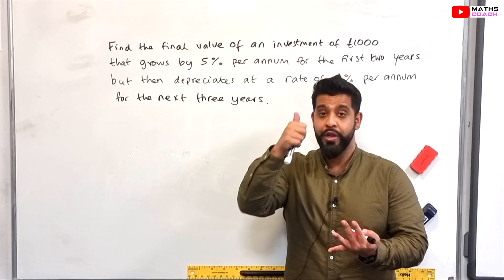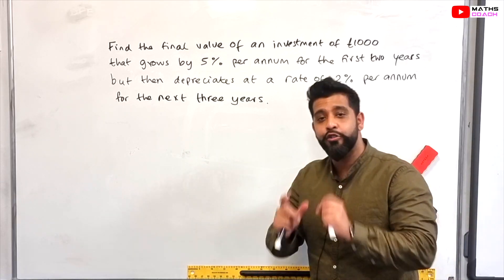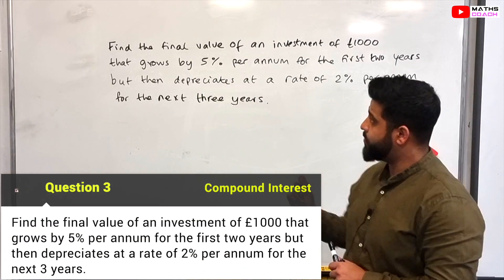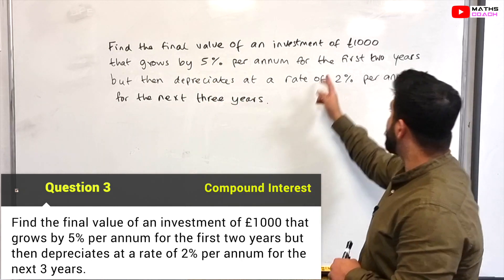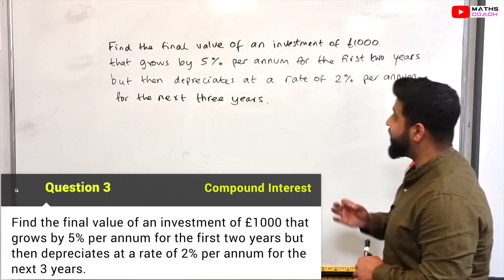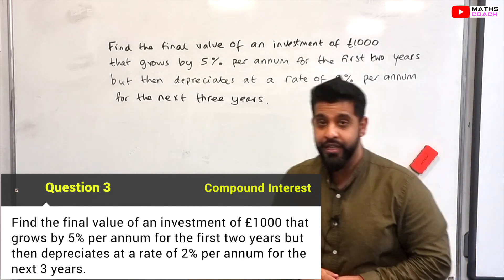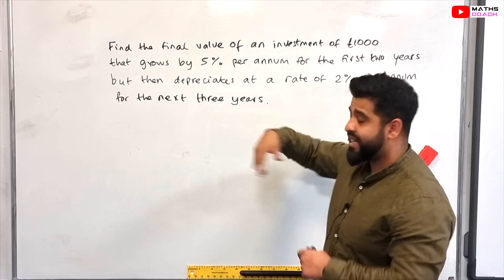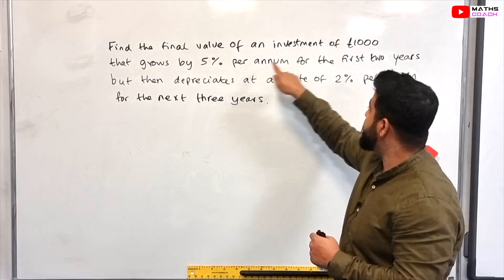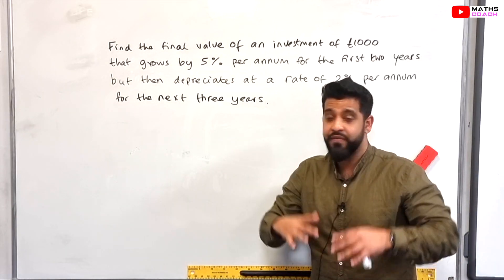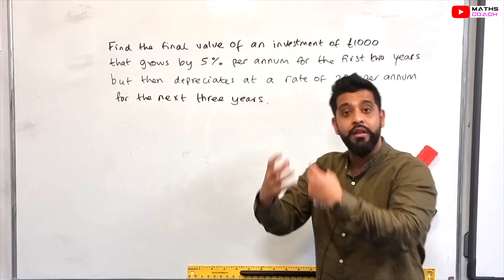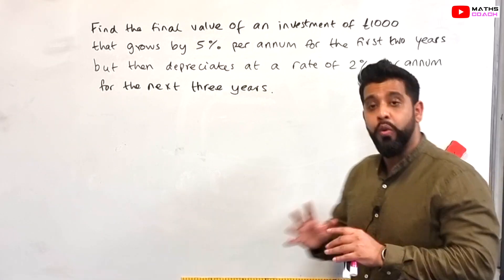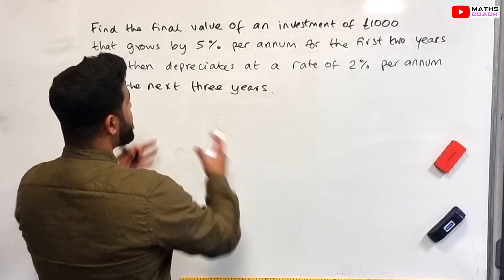Now that you've done a compound interest where you have an increase and a decrease, let's have a look at another interesting question to finish off this lesson. Find the final value of an investment of £1,000 that grows by 5% per annum for the first two years but then depreciates at a rate of 2% per annum for the next three years. So what does this mean? You put £1,000 into a savings account or some sort of investment that you've done and it grows by 5% every single year for two years. However after that for some reason it starts depreciating, decreasing in value at a rate of 2% per year for the next three years.